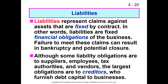Liability obligation holders include a pretty wide range: suppliers, vendors, employees, and even taxes — not-for-profits pay some taxes, such as payroll tax, though not income or property tax. The largest obligations are to creditors who furnish debt capital to the business — bondholders and lenders such as banks that may be mortgaging large property purchases.